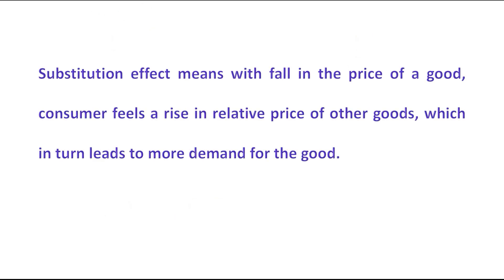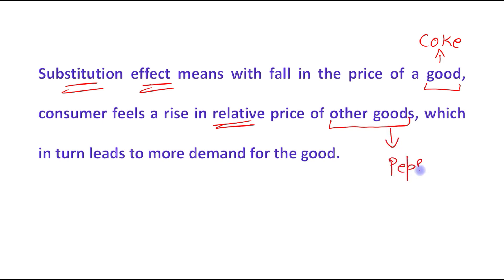So basically, substitution effect means: with a fall in the price of a good — in our case, a fall in the price of Coke — the consumer feels a rise in the relative price of other goods. In our case, the other good is Pepsi. Pepsi has become costlier relative to Coke, which in turn leads to more demand for Coke. This shows an inverse relationship between price and quantity demanded.